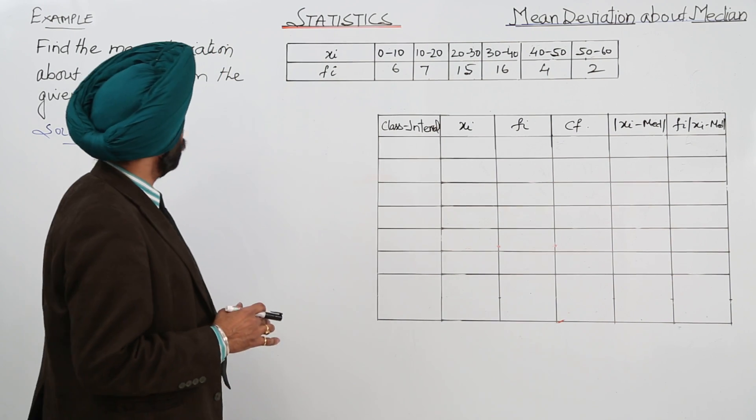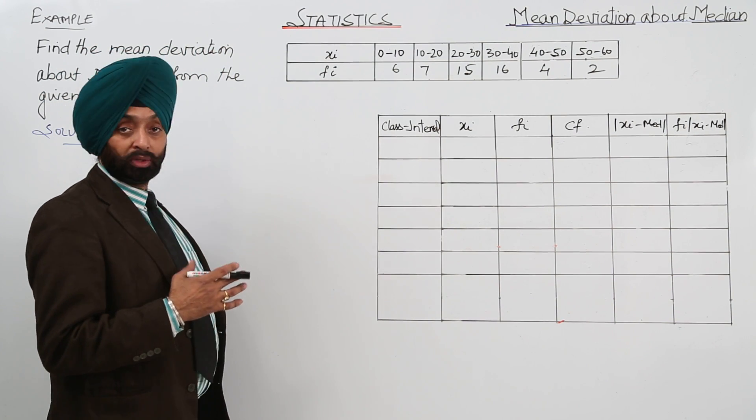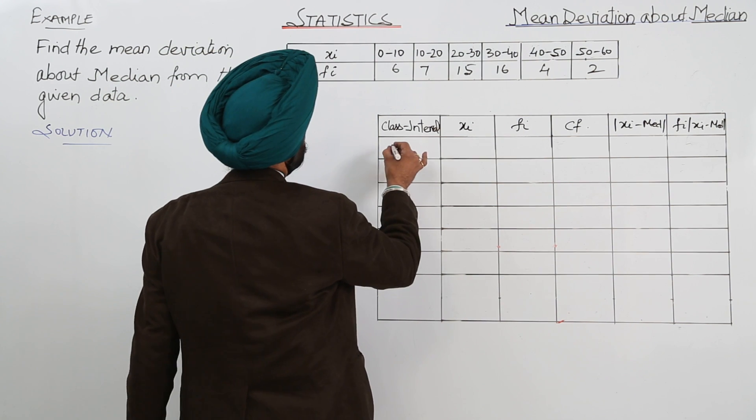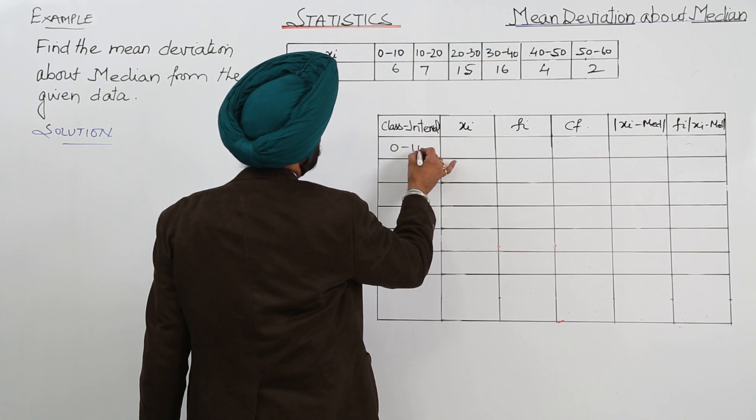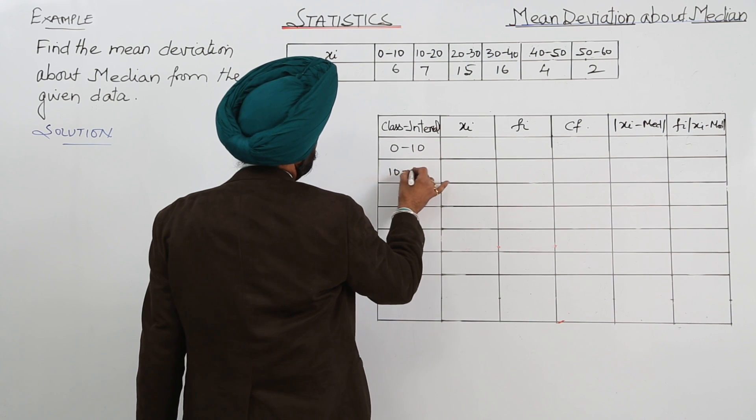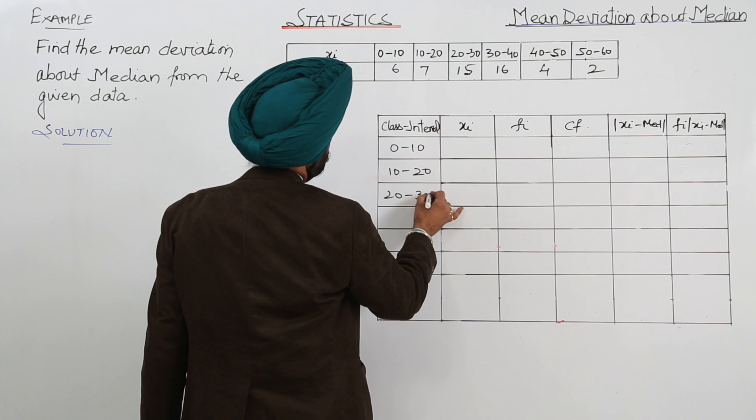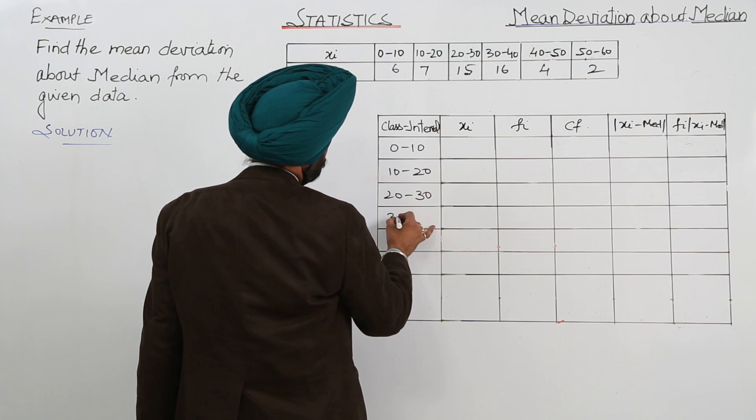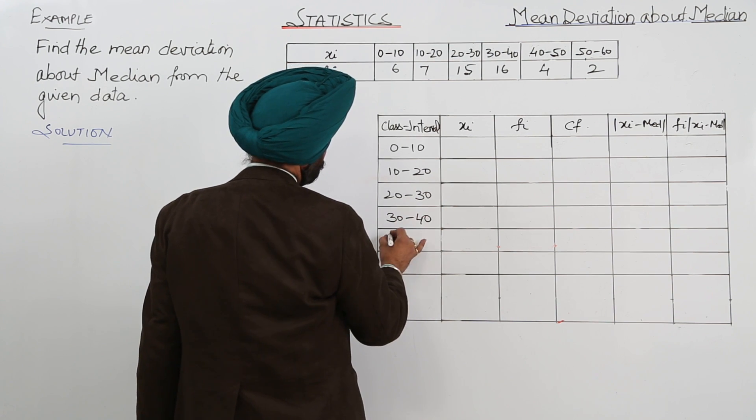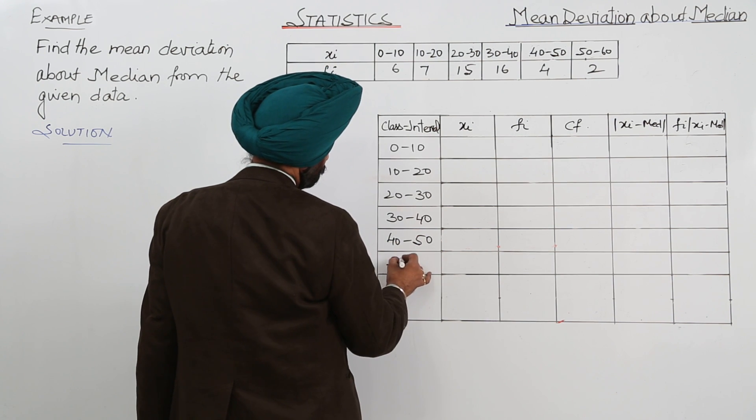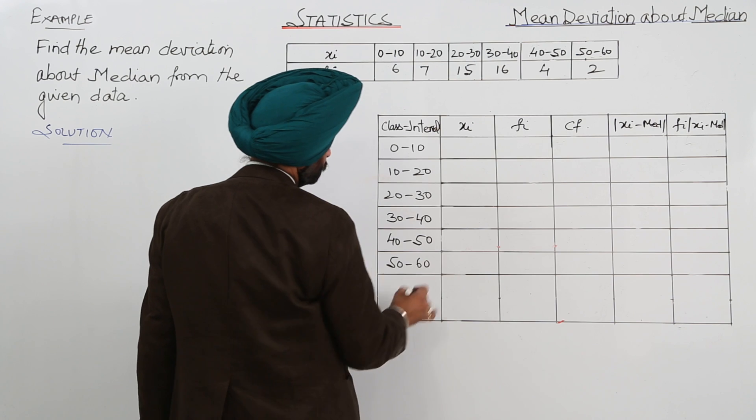Find the mean deviation about median from the grouped data. Now the data is 0 to 10 class interval, 10 to 20, 20 to 30, 30 to 40, 40 to 50, and 50 to 60.